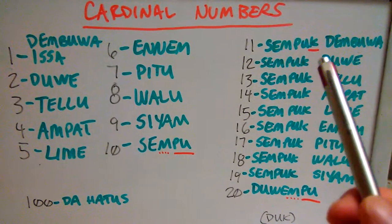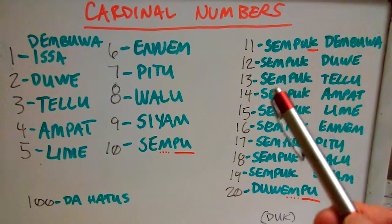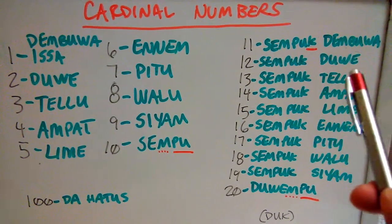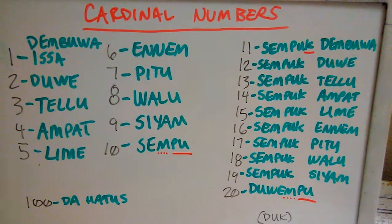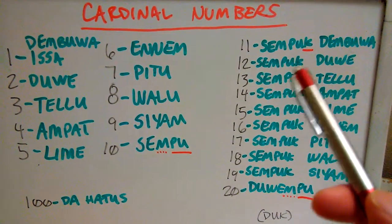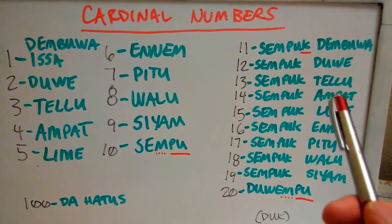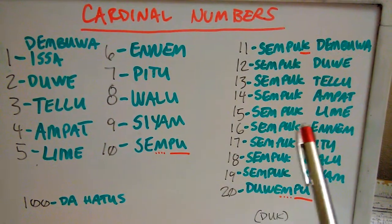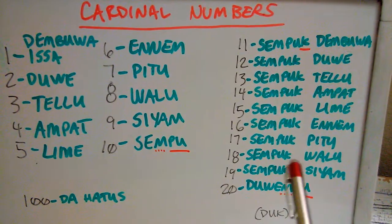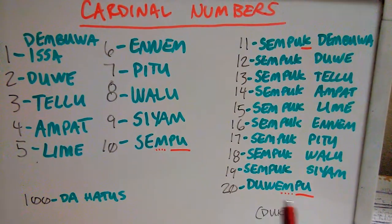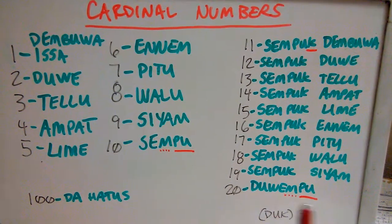So Sempuk Dembuwa is 11, and Sempuk Duwe is 12 — ten and two. Ten is Sempu plus Duk, giving us Sempuk with that K at the end. Continuing: Sempuk Telu (13), Sempuk Empat (14), Sempuk Lime (15), Sempuk Enem (16), Sempuk Pitu (17), Sempuk Walu (18), Sempuk Siam (19). And 20 is Duwempuk.